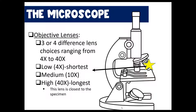You have low, medium, and high power objectives. The low power objective magnifies four times the original size and it's the shortest objective lens. The medium power objective magnifies 10 times the original size of the specimen and is the medium length one. The high power objective is the longest one and magnifies the greatest amount, which is typically 40 times the original size of the specimen.